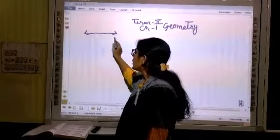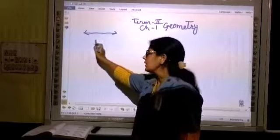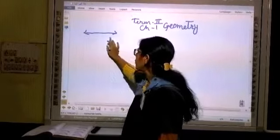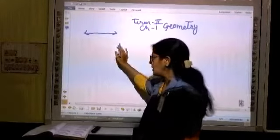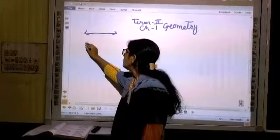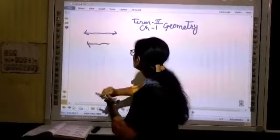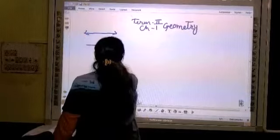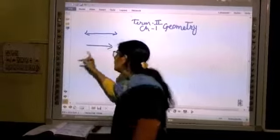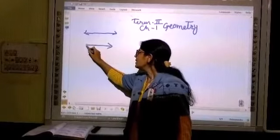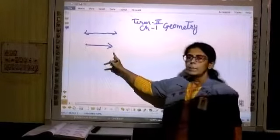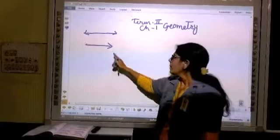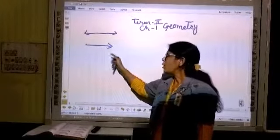Means, line can we have no end, measure nahi kar sakte hai. Line mein dono side arrow hota hai, it can extend both the sides. Then, ray. Ray has a starting point but has no end point. Ray also we cannot measure.